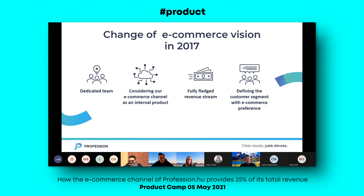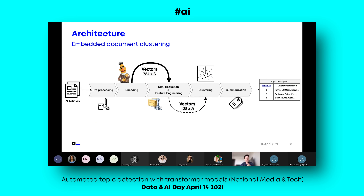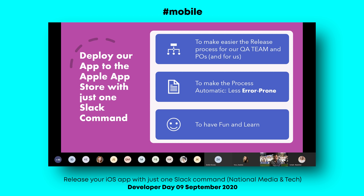In 2017, we changed the vision regarding e-commerce. This diagram shows all the processes until we have a clear mapping between an article and a topic. And today I would like to talk about how to release the application with just one Slack command.